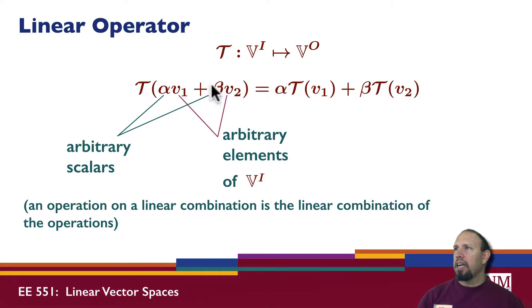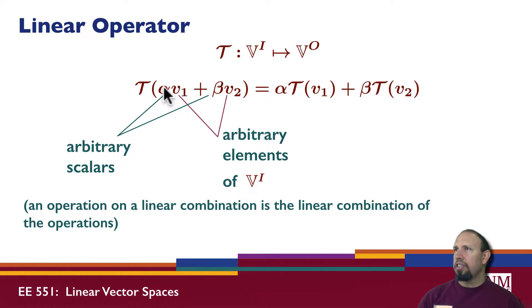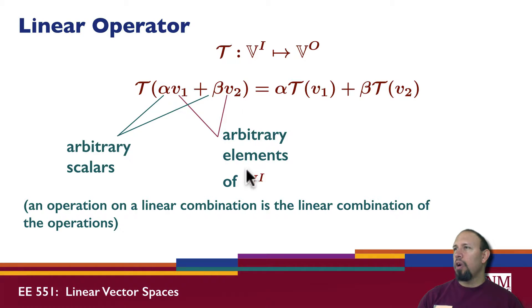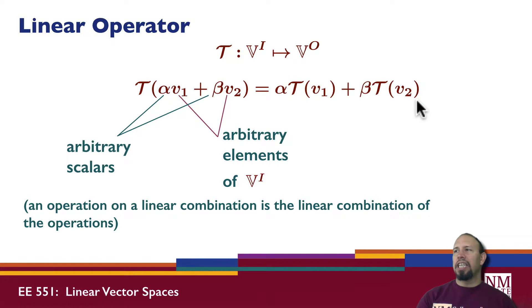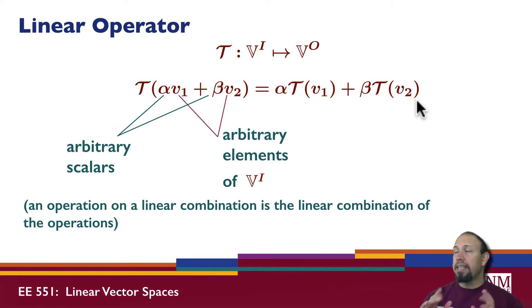It satisfies this relationship: T applied to a weighted sum of vectors in the input space gives a weighted sum of the operator applied to the individual vectors. The constants alpha and beta are arbitrary scalars in the field over which the vector space is defined, and V1 and V2 are arbitrary elements of Vi. This is the defining property for a linear operator — an operation on a linear combination is a linear combination of the operations.